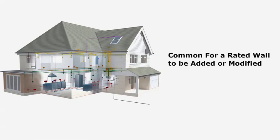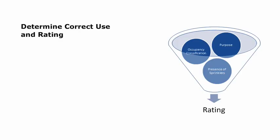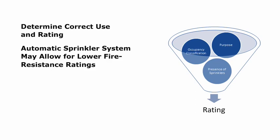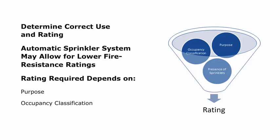It is very common for a rated wall to be added or modified during an interior project, whether it includes a new layout, new finishes, or the addition of wiring and cabling. Work done may affect a rated wall, so it is important to determine the correct use and rating of the fire barrier, horizontal assembly, or fire partition when adding a new one or modifying an existing one. For all three types, the presence of an automatic sprinkler system may allow for lower fire resistance ratings. The rating depends on the purpose of the assembly, the occupancy classification, and whether the space has sprinklers that meet current code requirements.